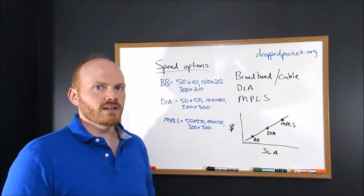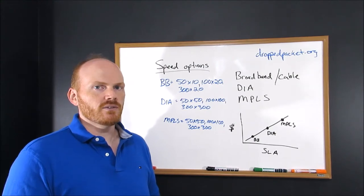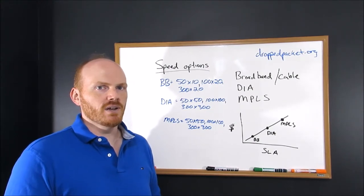DIA and MPLS, on the other hand, are symmetrical. So if you buy a 50 meg service, you're going to get 50 meg up and down.